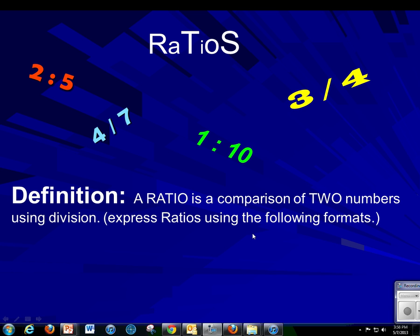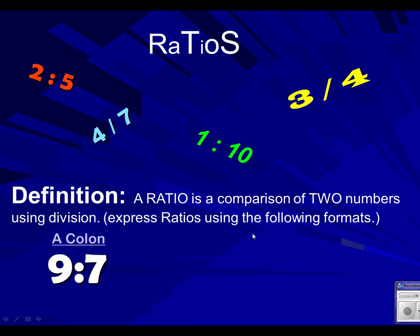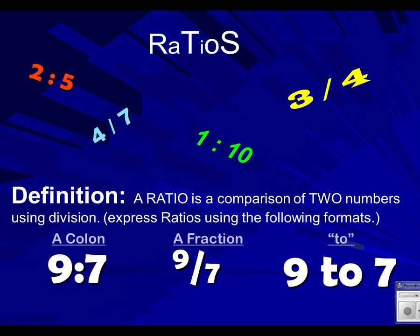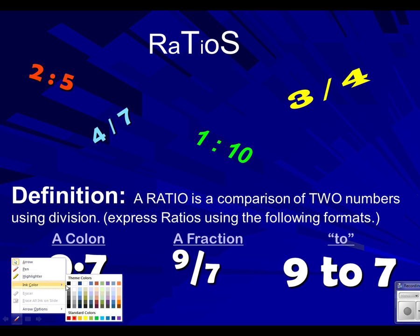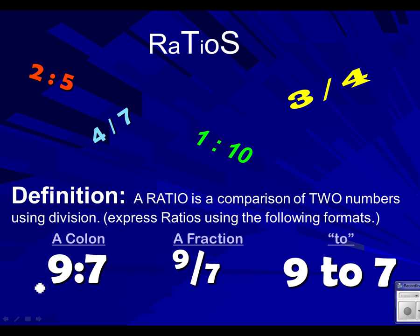And there are three ways that you can express it. One way is to write it using a colon. You can write it as a fraction. And you can write it using the word 'to.' One thing you need to keep in mind when you're reading or reciting these is that even though they're all written differently, they're all said the same way.